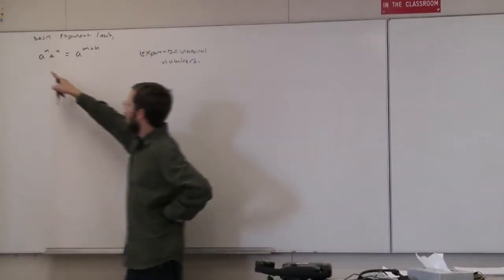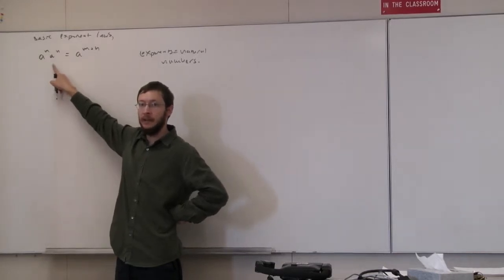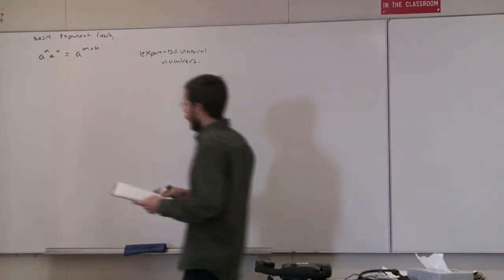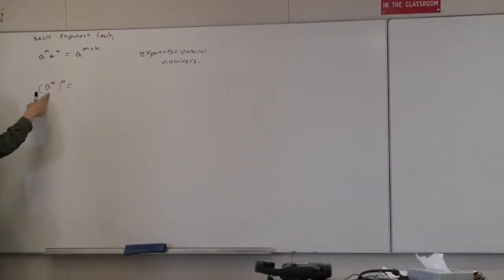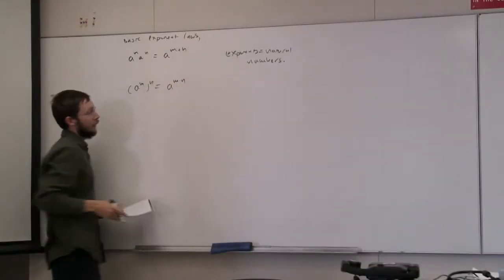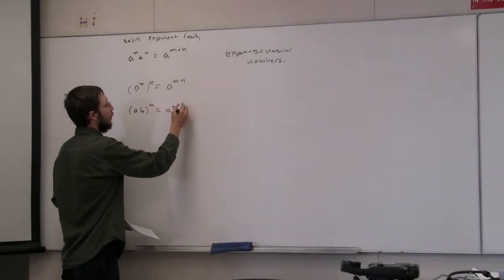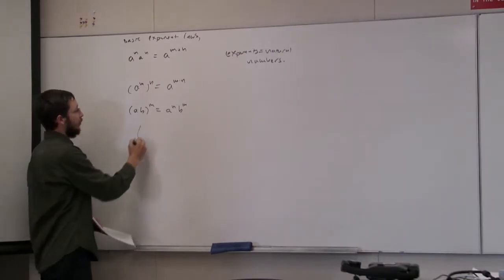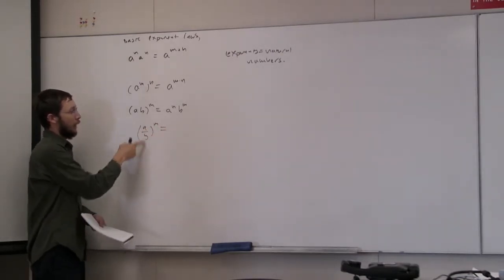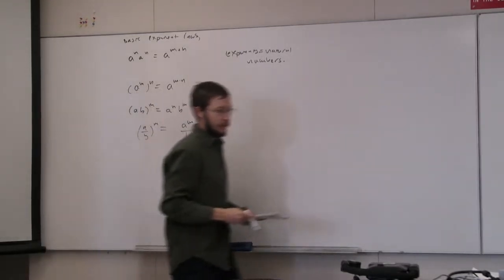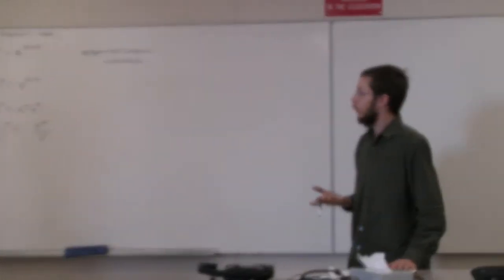That one's really easy to verify: just write out n copies of a, then n more copies of a, and when you multiply them together you get n plus n copies of a. The same goes for a to the n raised to the n — multiply out n copies of a — and for fractions a over b to the n, write out multiple copies of a over b and you just get a to the n over b to the n. These are really easy proofs for the natural numbers.